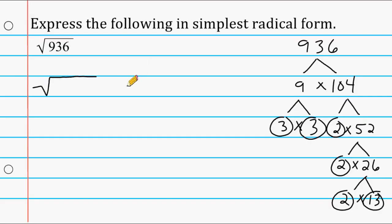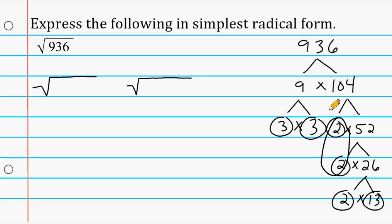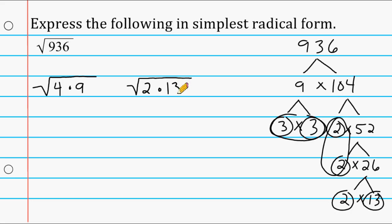One radical is for the perfect squares and one for the factors you have left over. We identify pairs of numbers — when you multiply a number by itself, it produces a perfect square. Here we have a pair of 2's, and 2 times 2 is 4, so write 4 underneath the perfect square radical. We also have a pair of 3's, and 3 times 3 is 9, so write 9 underneath that radical symbol. We have a 2 left over and a 13 left over, which go underneath the other radical symbol.